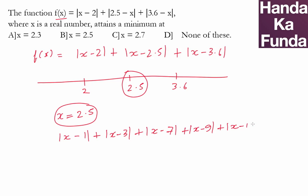And you are asked to find out when will this function be minimum. You have an odd number of values. Mark them out: 1, 3, 7, 9, and 100.